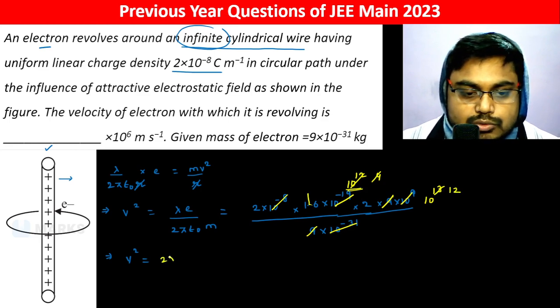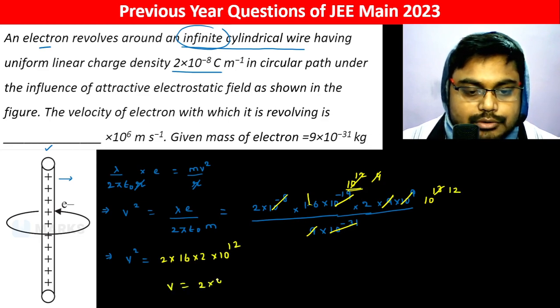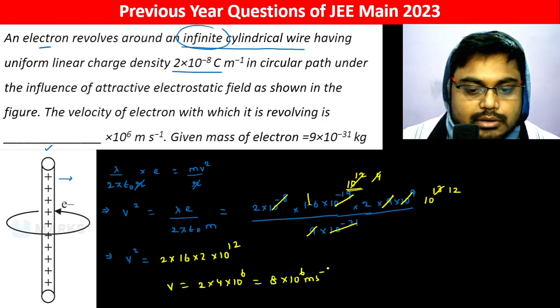V² is 2×16×2×10... This becomes 2×4×10⁶, which is 8×10⁶ meters per second.